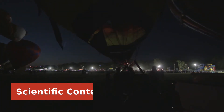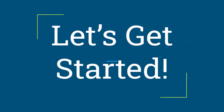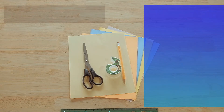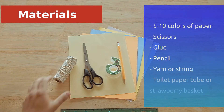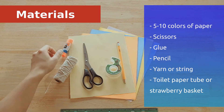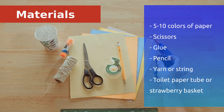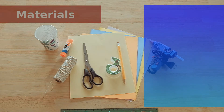Now that we have a little bit more background let's get started on our art project. The materials you'll need are five to ten colored pieces of construction paper or scrapbook paper, some scissors, some glue, a pencil, some string or yarn, and a toilet paper tube, a strawberry basket, or paper to construct a basket.